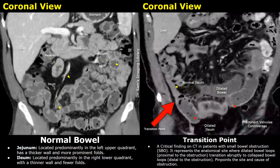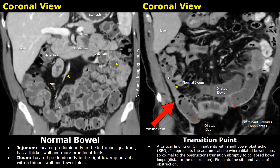A transition point is a very important feature in locating the small bowel obstruction. The transition point is the intersection between a dilated bowel and a normal bowel. Here you can see dilated ileum, and this junction is the transition point. After this transition point you can see normal collapsed ileum — so this is the location of the obstruction. The dilated bowel loops are seen proximal to the obstruction and the normal collapsed bowel is seen distal to the obstruction.